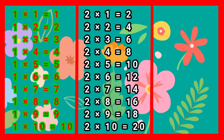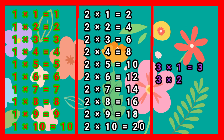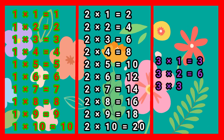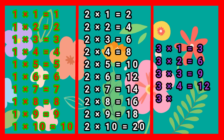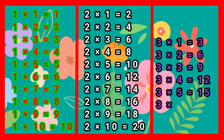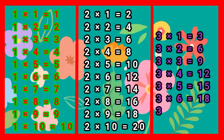Multiplication Table of 3. 3 times 1 jah 3. 3 times 2 jah 6. 3 times 3 jah 9. 3 times 4 jah 12. 3 times 5 jah 15. 3 times 6 jah 18.